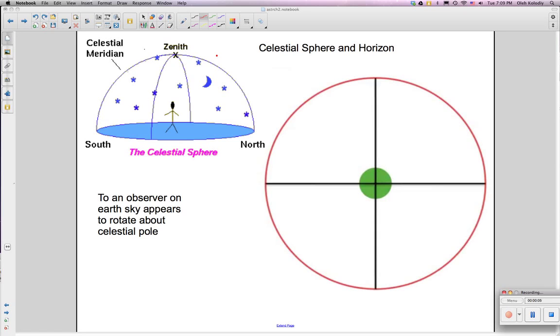So let us see what we see in the sky, how that translates to our model of the celestial sphere. So here we are standing, looking around. We have our zenith, we have the stars, we have north and south.